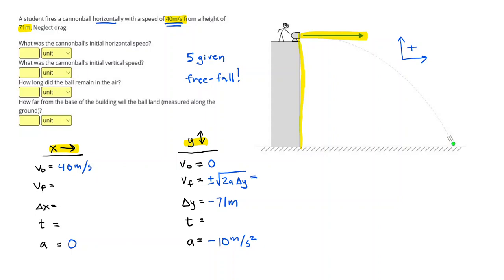So plugging in there, I can get the square root of 2 times negative 10 times negative 71, which gives me 37.7. And I choose the negative since it's going downwards.